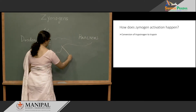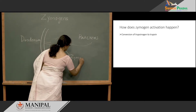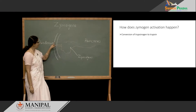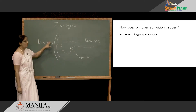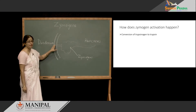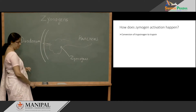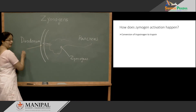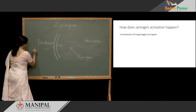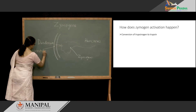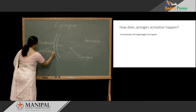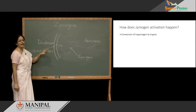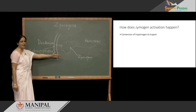They are all produced in the pancreatic acinar cells, synthesized and stored in the pancreas as zymogen forms. Once the chyme enters the duodenum, these zymogens are released into the duodenum. On the surface of the mucosal cells, there is an enzyme called enteropeptidase. Once the zymogens reach the lumen of the duodenum, enteropeptidase activates all these zymogens directly or indirectly.